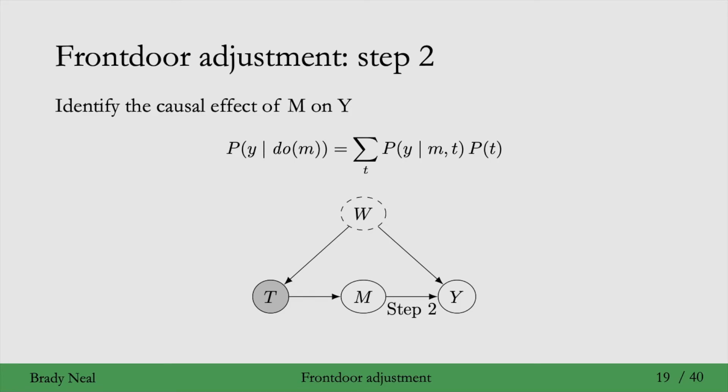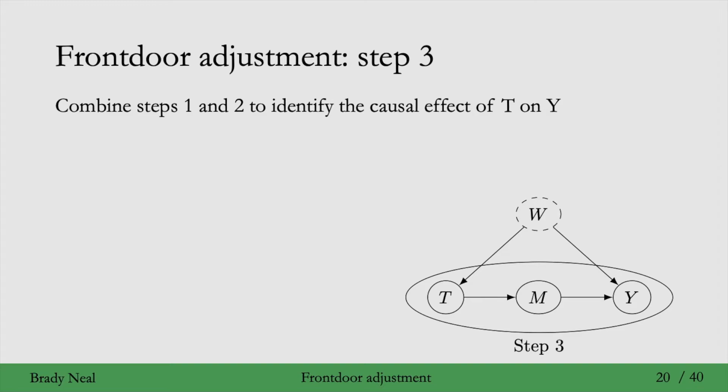And then in the final step, step three, we just combine what we got in step one and step two to identify the causal effect of T on Y. So the causal quantity of interest here is P of Y given do T. To get this, we start with the causal association flowing from T to M that we got in step one. And we chain this together with the causal association flowing from M to Y that we got in step two.